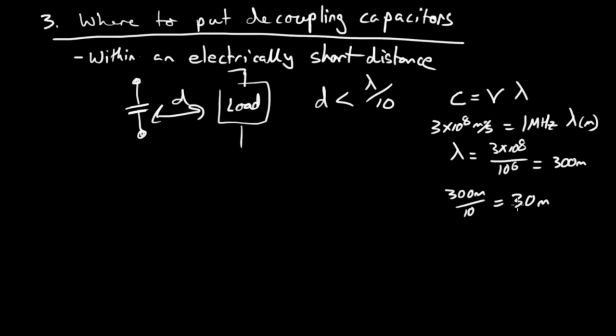And so as long as you're putting your capacitor 300 meters divided by 10 or 30 meters from your IC, which is always going to be the case in a printed circuit board, you're okay, as long as you're putting it there. Within that distance, you can model it as a DC circuit for the most part.